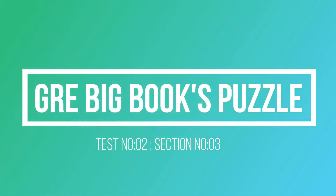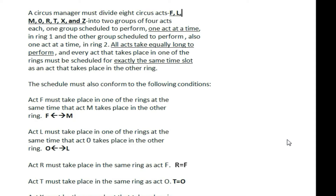This is the Big Book Puzzle series in November. A circus manager must divide 8 circus acts into 2 groups of 4 acts each. One group is scheduled to perform 1 act at a time in ring 1, and the other group is scheduled to perform also 1 act at a time in ring 2. All acts take equally long to perform, and every act that takes place in one of the rings must be scheduled for exactly the same time slot as an act that takes place in the other ring.